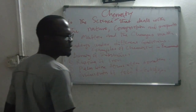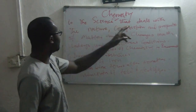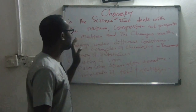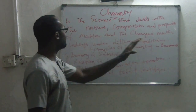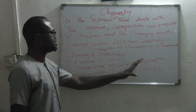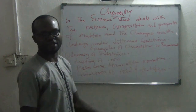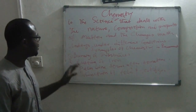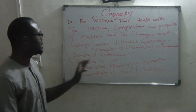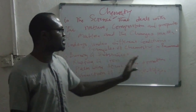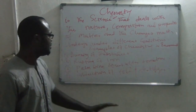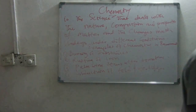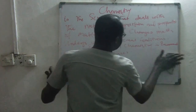Is that clear? Yes. So in summary, chemistry is the science that deals with the nature, composition and properties of matter, and changes matter undergoes under different conditions. Examples of chemistry in nature or in our everyday life include burning of substances, rusting of iron, palm wine souring after some time, and production of food and fertilizers. Is that clear? Yes. So we're going to move on.